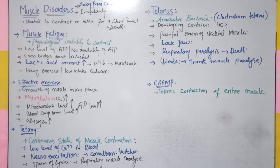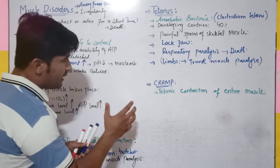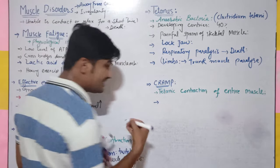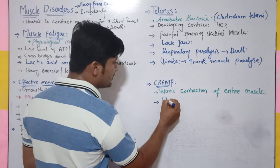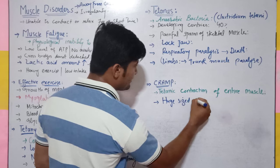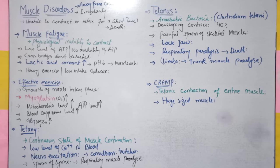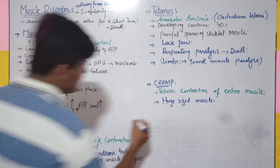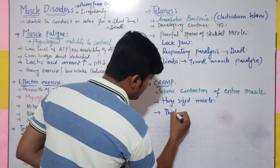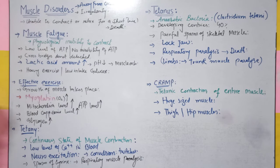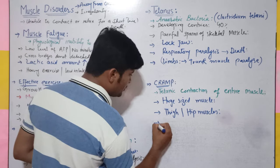Next jo hamare paas hai that is the cramp. Cramp kya hai? Tonic contraction of entire muscle — poore ke poore muscle ki jab contraction ho jaati hai use cramp kehte hain. Aisa tab hota hai aur kaun se muscles mein hota hai? Jo huge sized muscles hain — masalan thigh ka muscle ya hip muscles — in mein zyada tar yeh contraction hoti hai. Muscles continuously akra jaate hain.